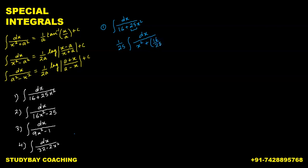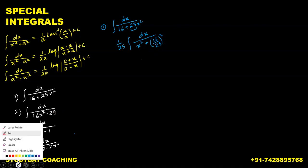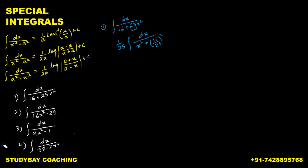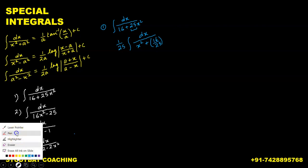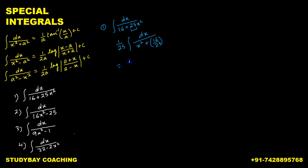We divided both the denominator and numerator by 25. Now, 16 upon 25 can be further written as (4/5)². So this becomes 1 upon 25 times the integral of dx upon x² plus (4/5)².